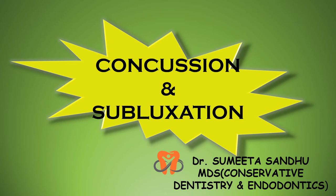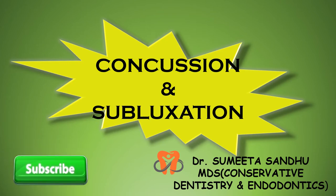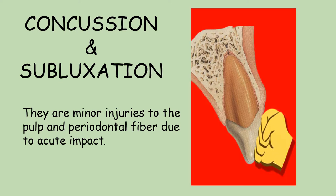In this lecture we'll be discussing concussion and subluxation. Both concussion and subluxation are minor injuries to the pulp and the periodontal fibers caused due to an acute impact. This acute impact can be a blow, a fall, an accident — anything that hits hard against the tooth structure.